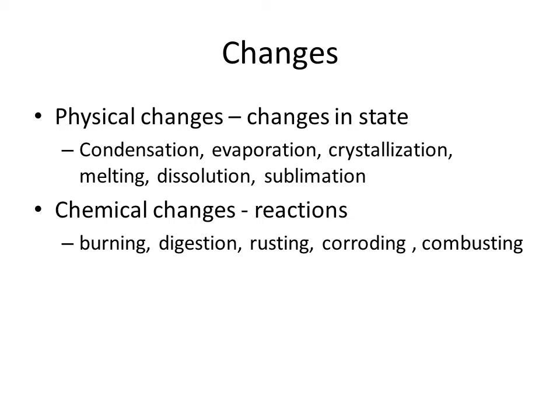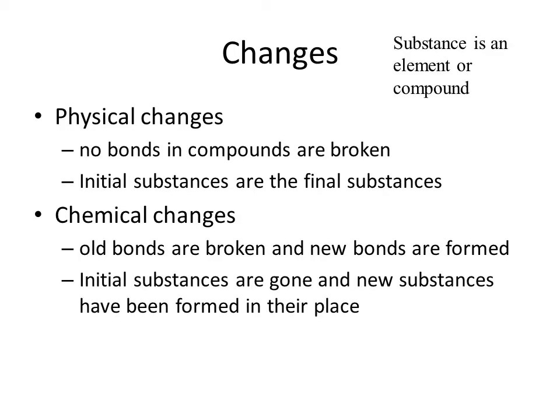A physical change is just a change in the physical state — whether it's a solid, liquid, or gas — and with a chemical change, there's a change in the formula. What happens with a physical change is that a substance remains the same thing. So the initial substance, like water, is the same thing as the final substance, water. No bonds are broken.